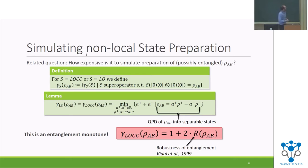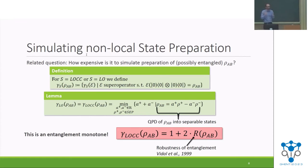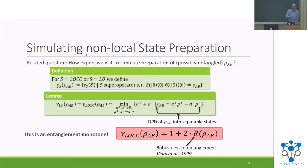Our gamma factor is nothing else than one plus two times the robustness of entanglement. This means that many properties known about this well-studied entanglement measure translate to our gamma factor. But you can also see it the other way around: we're giving a new operational interpretation of the robustness of entanglement — it's the optimal overhead for simulating a non-local state using the quasi-probability method. So now we have a pretty good grasp on the gamma factor for states. How can we use that to say something about the gamma factor of channels?